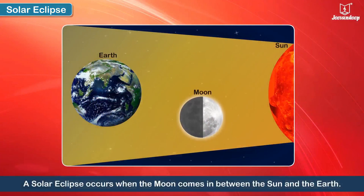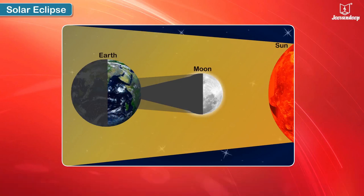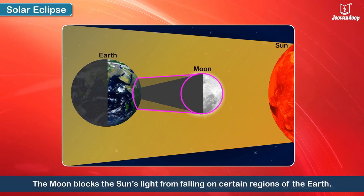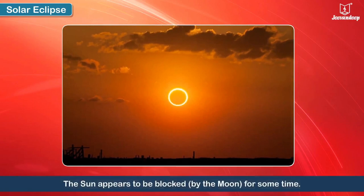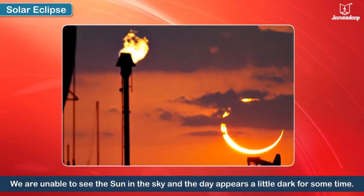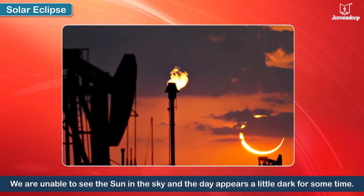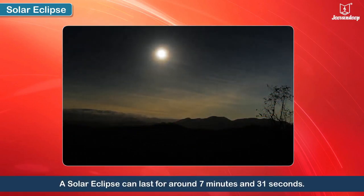A solar eclipse occurs when the Moon comes in between the Sun and the Earth. As a result, the Moon blocks the Sun's light from falling on certain regions of the Earth. For the people in these regions, the Sun appears to be blocked by the Moon for some time — this is called a solar eclipse. During the solar eclipse, we are unable to see the Sun in the sky and the day appears a little dark for some time. A solar eclipse can last for around 7 minutes and 31 seconds.